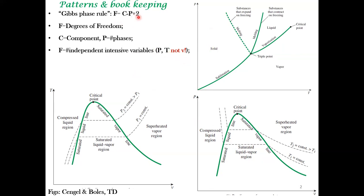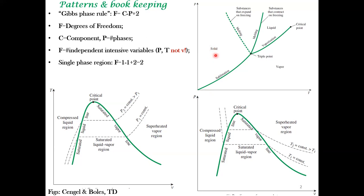Let's apply this rule without further derivation. In the single-phase region, C equals one and the number of phases P equals one, so F equals one minus one plus two, giving F equals two. You have to specify two intensive variables to fix the state of the system. For example, in a solid phase, fixing pressure alone still allows any temperature — you haven't fixed the state. But as soon as you specify both P and T, the state is well defined. This applies equally to the single-phase liquid and single-phase vapor regions.